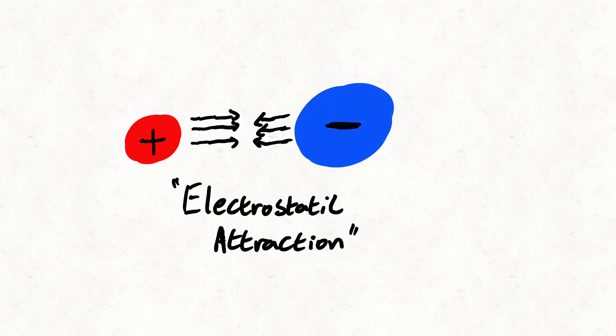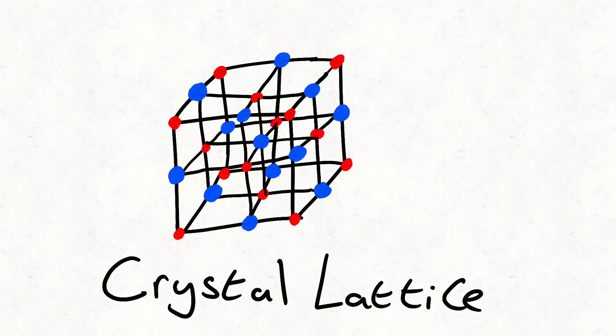An ionic bond is an electrostatic attraction between oppositely charged ions. These ions are arranged in a crystal lattice with alternating charges. As you can see, the negative ions are larger than the positive ions since the addition of electrons causes more electron repulsion, making the ion bigger.